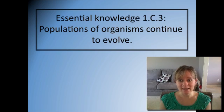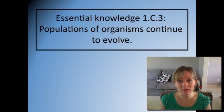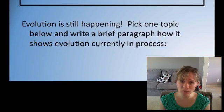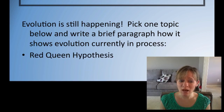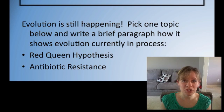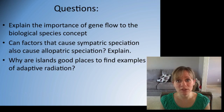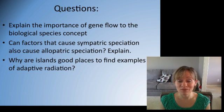To conclude: populations of organisms continue to evolve. You might not see a new species form in your lifetime, but it is happening because the environment is always changing. For your first assignment, pick one topic — such as the red queen hypothesis or antibiotic resistance — and write a brief paragraph on how it shows evolution still happening today. For the second assignment, answer three short questions in your end-of-video notes that we will go over in class.